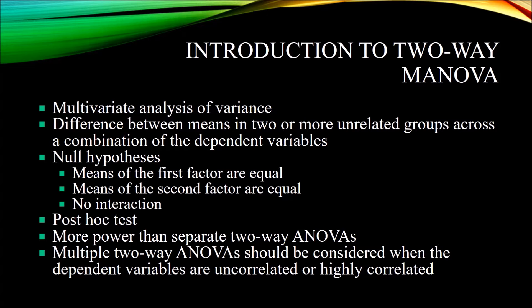A MANOVA is a multivariate analysis of variance — an extension of a univariate analysis of variance where you have more than one dependent variable. In a univariate ANOVA, you can only have one dependent variable, one outcome. In a MANOVA, you can have multiple dependent variables. A two-way MANOVA looks at the difference between means in two or more unrelated groups across a linear combination of the dependent variables and includes two factors, or independent variables.